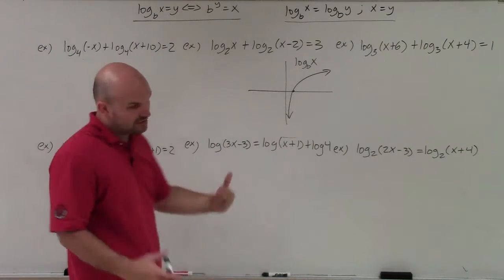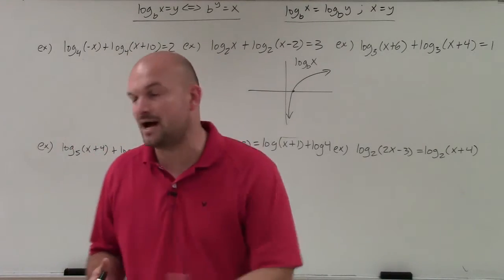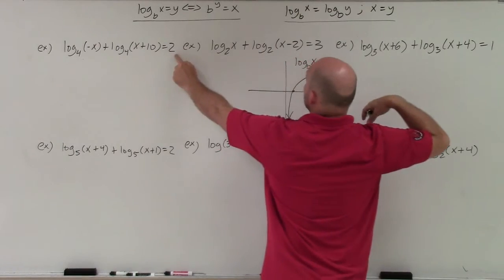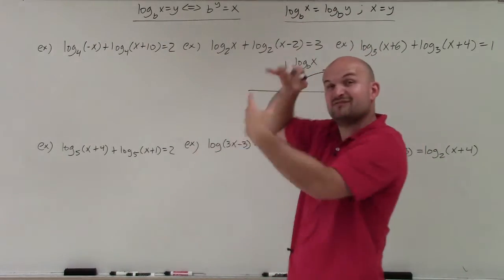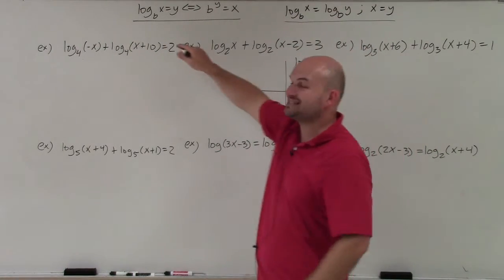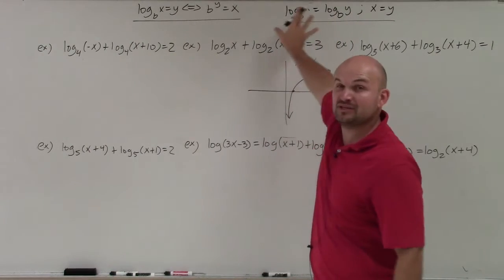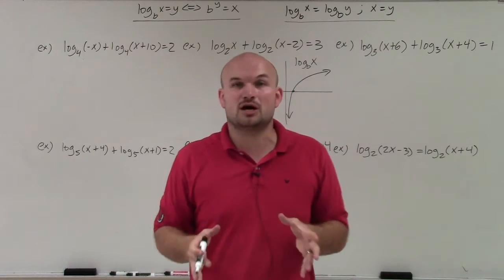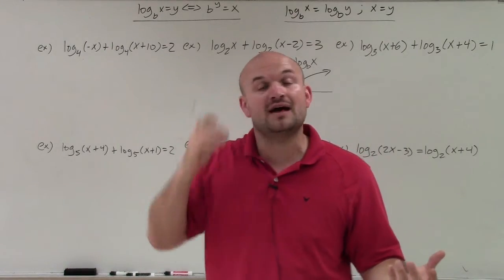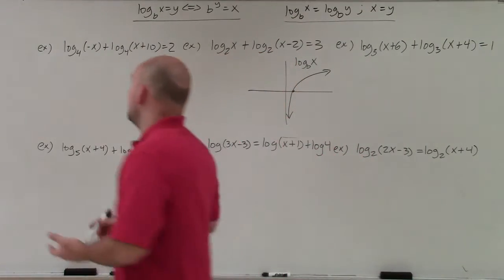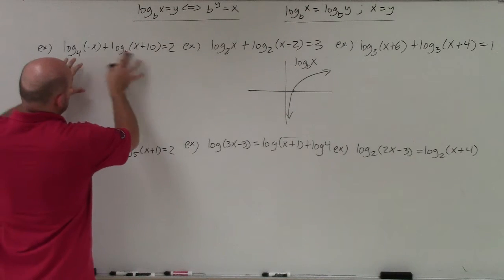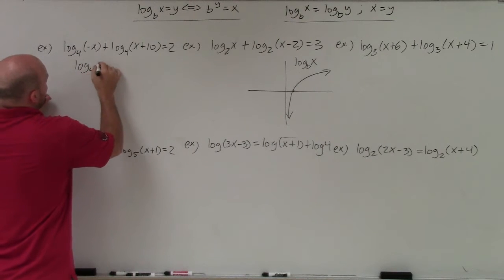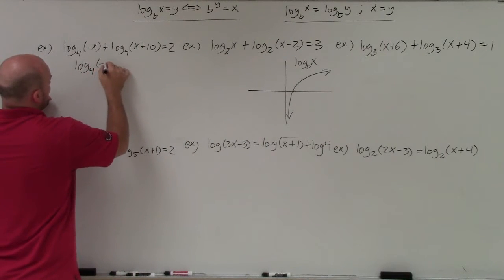In the first example, I have two logarithms on the same side. I don't want to move them to use the one-to-one property because there's still a 2 there, and the one-to-one property only works when you have a logarithm equal to a logarithm. So I'm going to keep these logarithms and condense them down to one logarithm using the product rule. The product rule states that if two logarithms have the same base and you're adding them, you can rewrite that as the product of those two values.